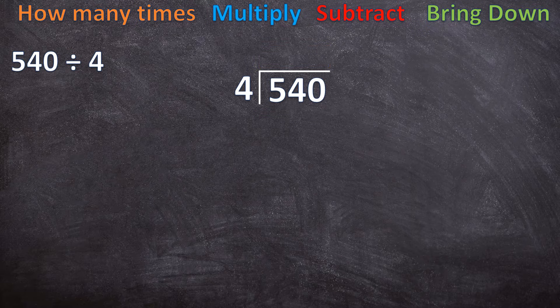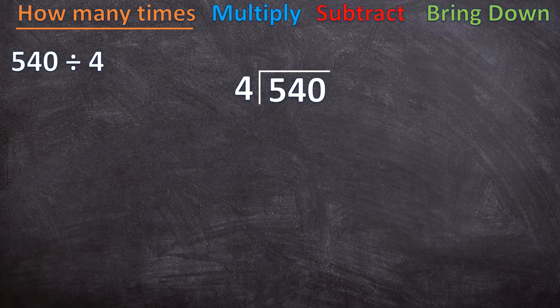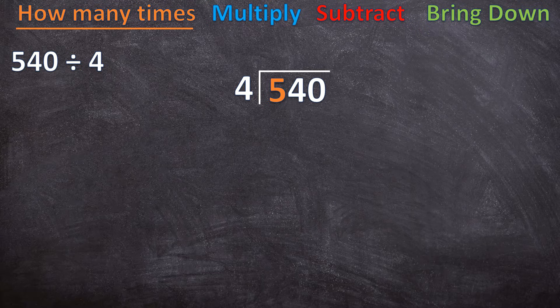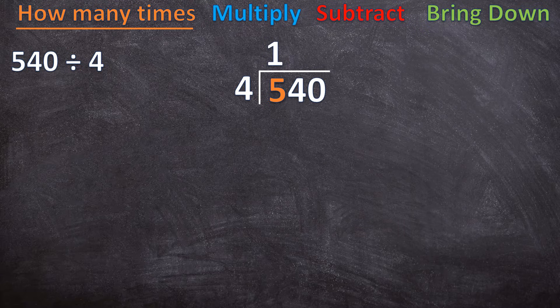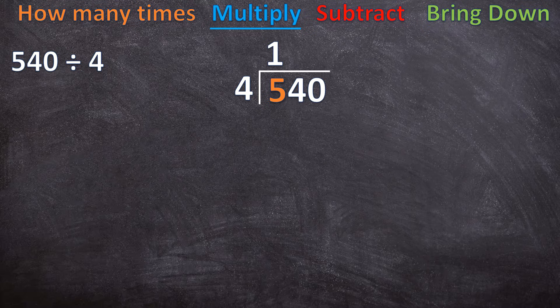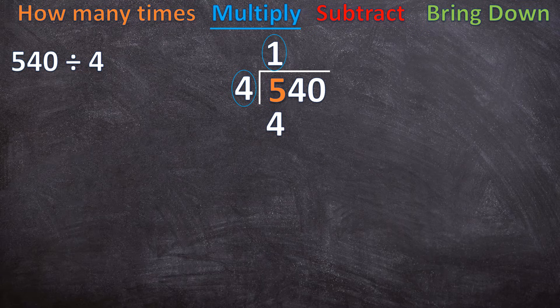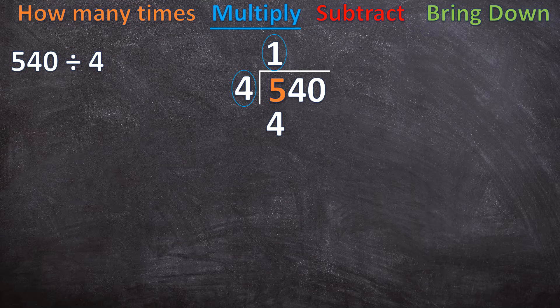So we start with our first step, how many times? And like I said, we go from left to right, so we start with five. Now we say, how many times can four go into five? One time. So our answer goes at the top, at the top of five, not just somewhere randomly, just above five. Now we move on to the next step, multiply. Now we say, what is one times four? And one times four is four. We write that exactly at the bottom of five, not just somewhere randomly, exactly beneath five.